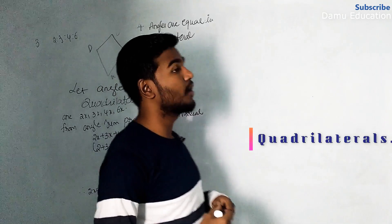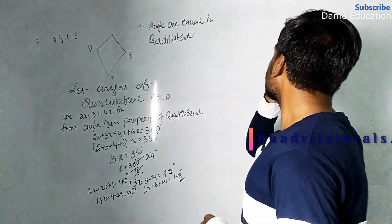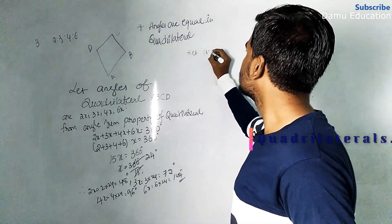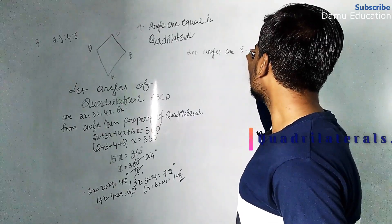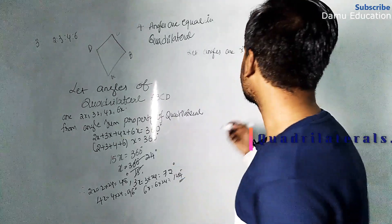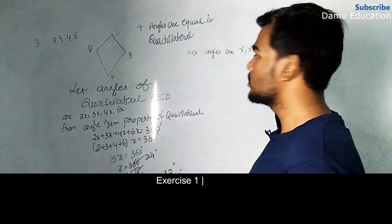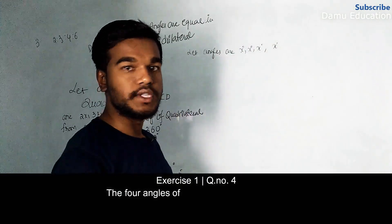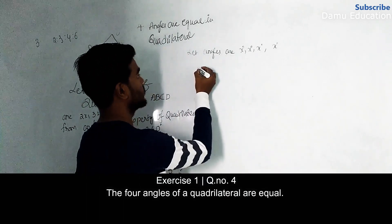In the fourth question, all angles are equal in the quadrilateral and we need to find them. Let each angle of the quadrilateral be x degrees. So all four angles are x, x, x, and x. We will use the angle sum property to find x.